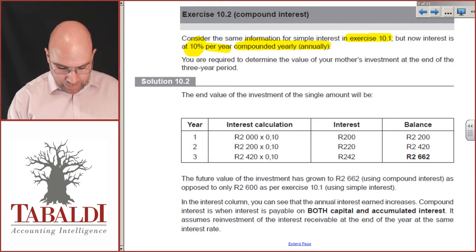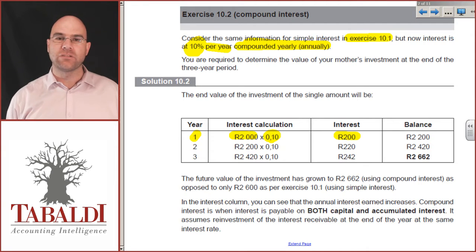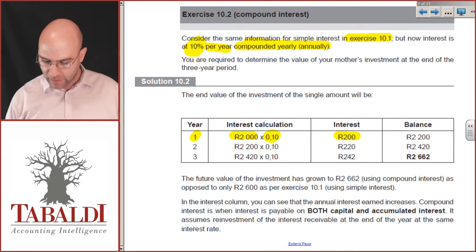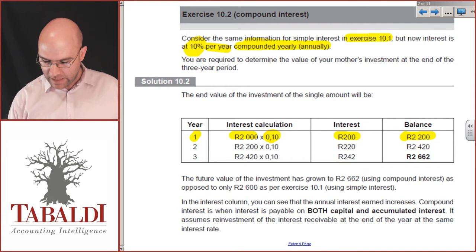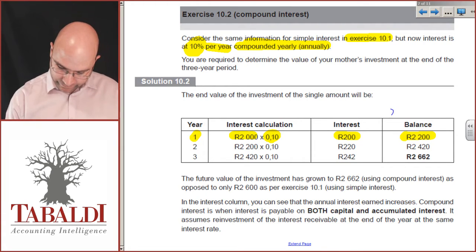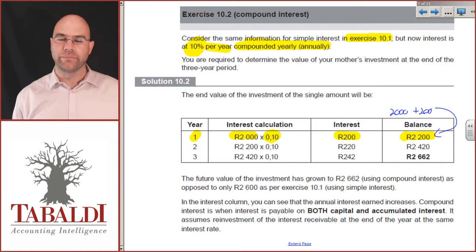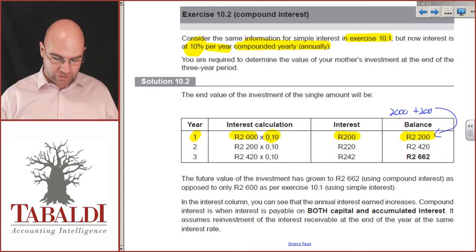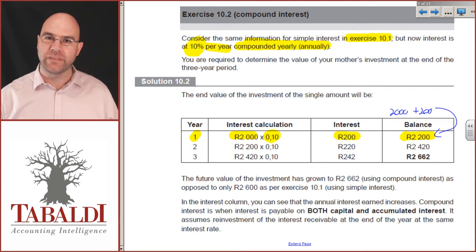The easiest way here would be: year one, we'd have 2,000 times 10%, which gives us 200 Rand worth of interest. Add that to the opening balance — 2,000 plus 200 gives me 2,200.